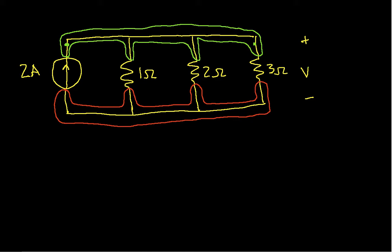So what this means is that if I want to look at the voltage across the 1-ohm resistor, it's the same as the voltage across the 2-ohm resistor or the 3-ohm resistor, and I've labeled this V.